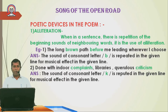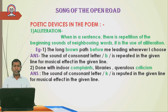For example, in this poem: 'The long brown path before me, leading wherever I choose.' In this sentence, the consonant letter B is repeated in the given line for musical effect. The B sound is repeated two times — first in the word 'brown' and second in the word 'before.' This is an example of alliteration.